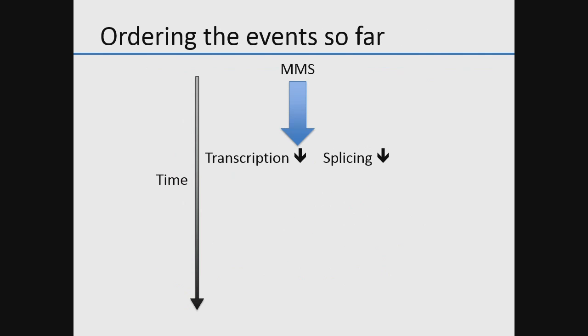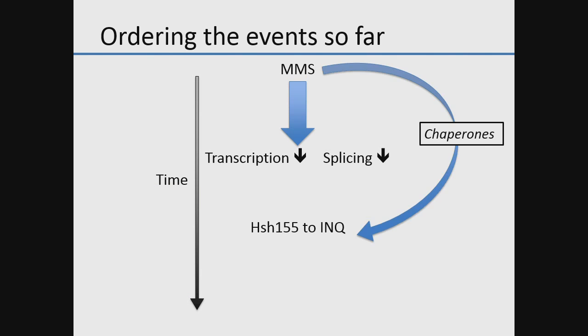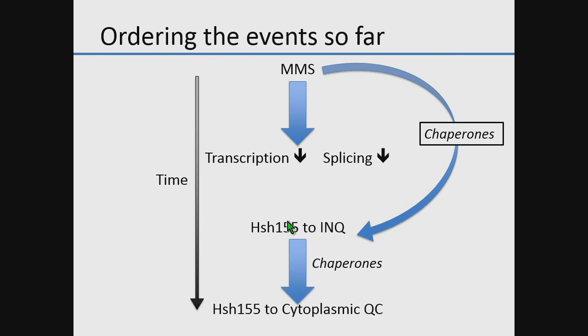MMS induces changes in transcription and splicing early, then induces the splicing factor — through chaperone action — to go to intranuclear quality control sites, and later to cytoplasmic quality control sites.